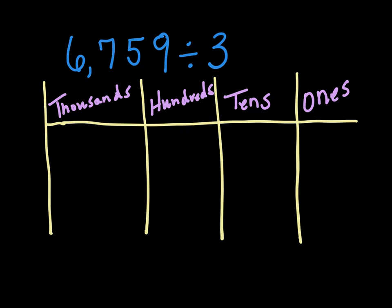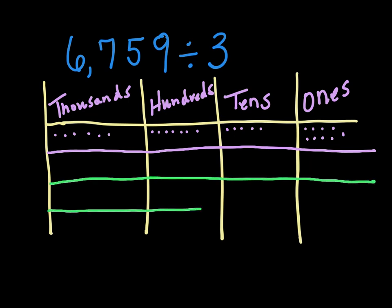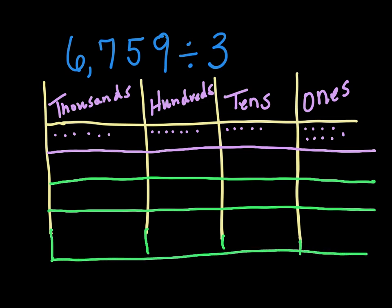6,759 divided by 3. I can see that the hundreds and the tens are not divisible by 3, but let's see if we can work this out. I'm going to separate these numbers: 6 in the thousands, 7 in the hundreds, 5 in the tens, and 9 in the ones. Now we have to split this up into 3 equal groups.